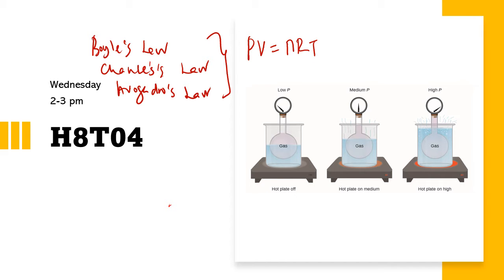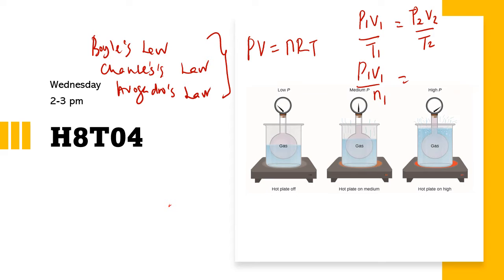From PV = nRT, when some variables are constant — for example, when the number of moles and the gas constant are fixed — we get the combined gas law: P₁V₁/T₁ = P₂V₂/T₂. Alternatively, if temperature is constant, we get the relationship P₁V₁/n₁ = P₂V₂/n₂. These are both examples of the combined gas law derived from PV = nRT.